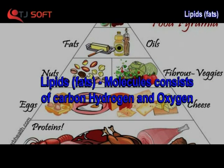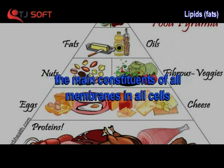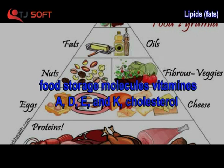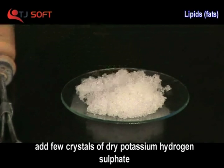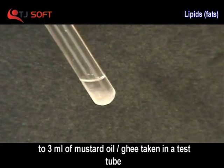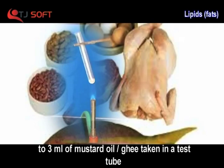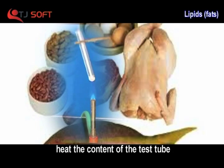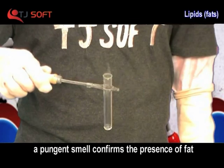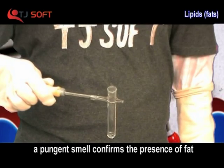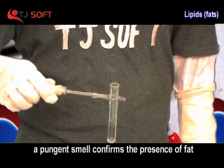Lipids or Fats: the molecule consists of carbon, hydrogen, and oxygen atoms. They are the main constituents of all membranes in a cell, serve as food storage molecules, and are associated with vitamins A, D, E, and K. Test: add a few crystals of dry potassium hydrogen sulfate to 2-3 ml of mustard oil or ghee in a test tube. Heat the contents of the test tube. A pungent smell confirms the presence of fat.